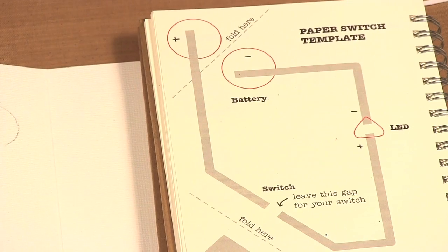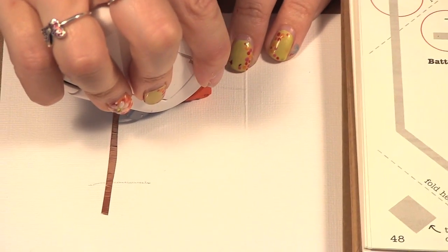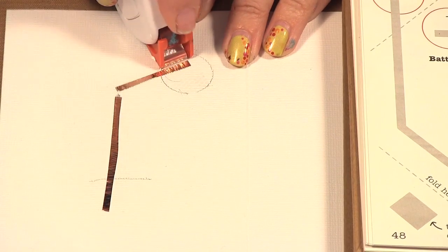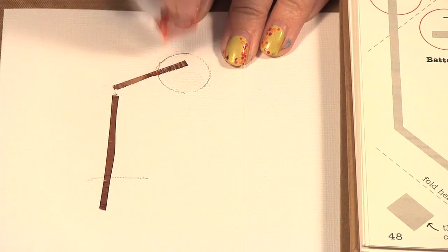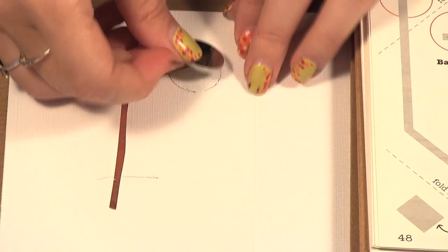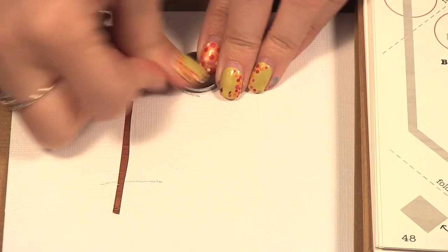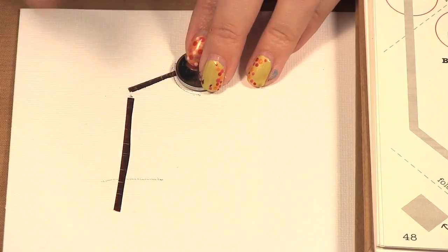So what I'm going to do is I'm going to put a little bit of adhesive to hold my battery but I don't want to cover that switch, that metal, and I'm going to put my battery there positive side up because this will be the negative and this will be the positive.